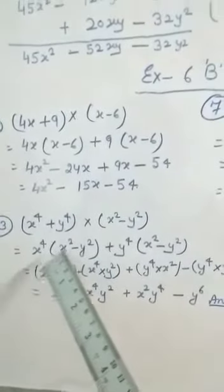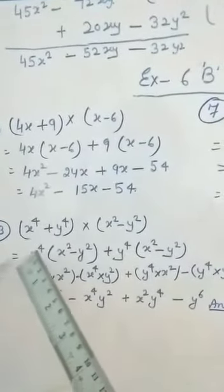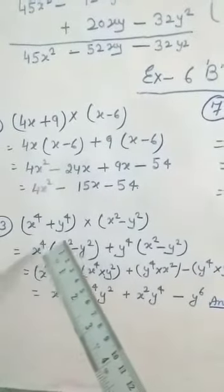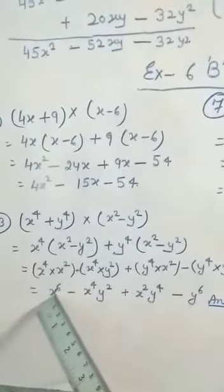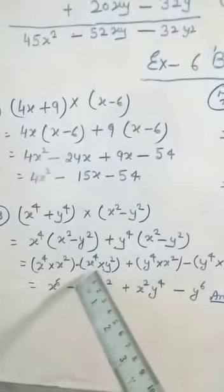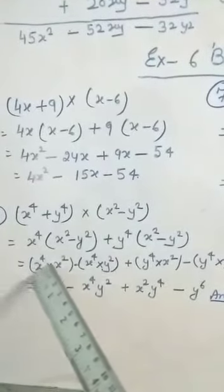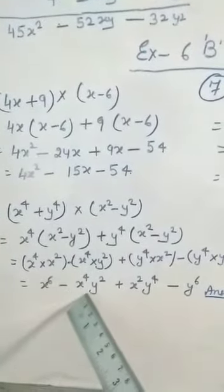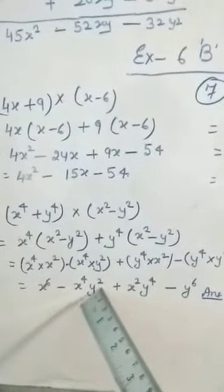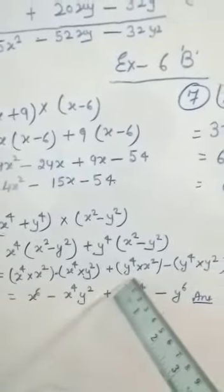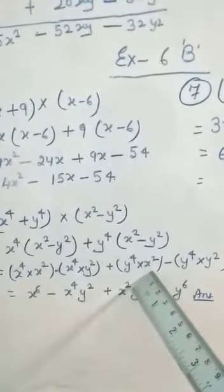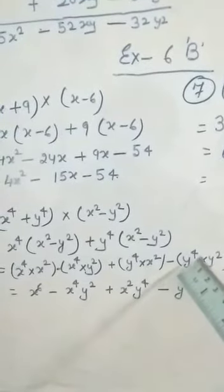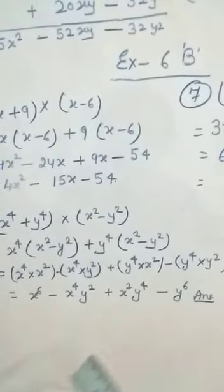Now x and x are like terms, so the powers are added: x to the power 4 into x squared gives x to the power 6. Next, x to the power 4 into negative y squared. Then y to the power 4 into x squared, and minus y to the power 4 into y squared.